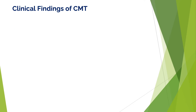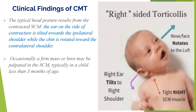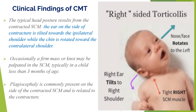Regarding the clinical findings of congenital muscular torticollis, as seen on the image, the typical head posture results from contracture of the sternocleidomastoid muscle. The ear on the side of the contracture is tilted towards the ipsilateral shoulder, while the chin is rotated towards the contralateral shoulder. Occasionally, a firm mass or knot might be palpated in the sternocleidomastoid muscle. Due to the sleeping position, plagiocephaly is commonly present on the side of the contracted sternocleidomastoid muscle.